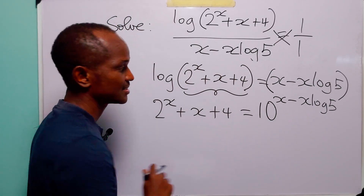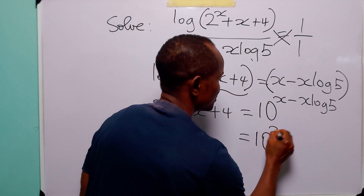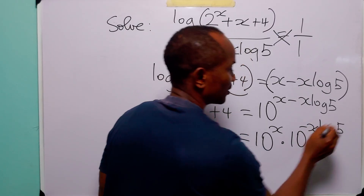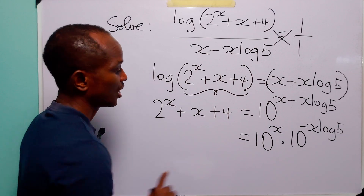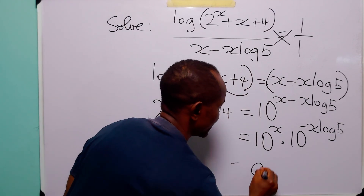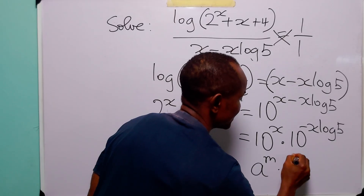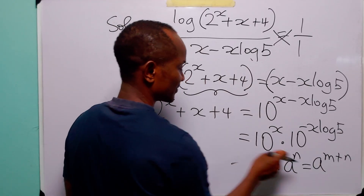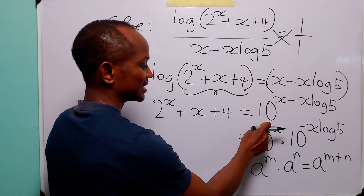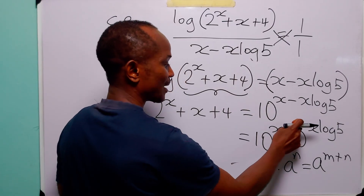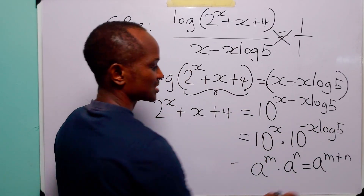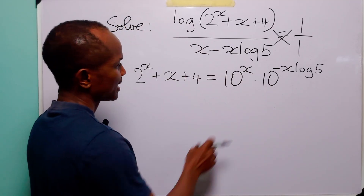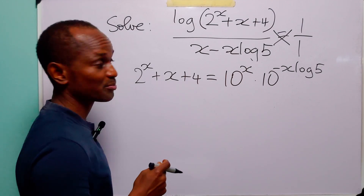Now let us look at this right-hand side. We can write this as 10 to the power x multiplied by 10 to the power minus x log 5, because the law of indices says that a to the power m multiplied by a to the power n is equal to a to the power m plus n. Here a is 10, m is x, n is minus x log 5, and m plus n is x minus x log 5.